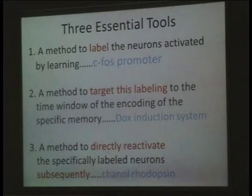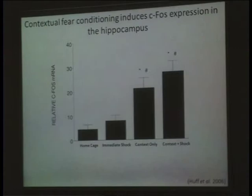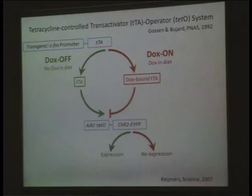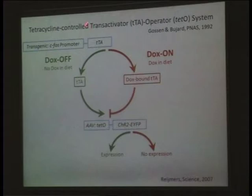The third tool is what is called optogenetics — a method to directly reactivate the specifically labeled neurons subsequently. The use of the c-fos promoter in the transgenic system is based on earlier studies by Bhalf and others, showing that this gene is temporarily activated in neurons — in this case in the hippocampus — when an animal undergoes some episodic learning. The second component, restricting the window of labeling the potential engram-bearing cells, is illustrated here.